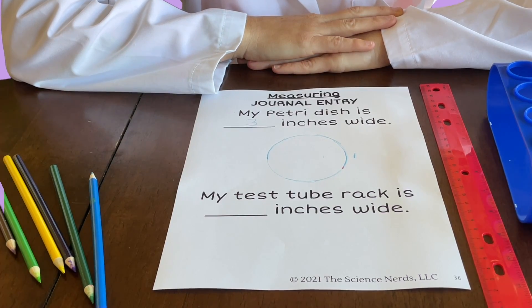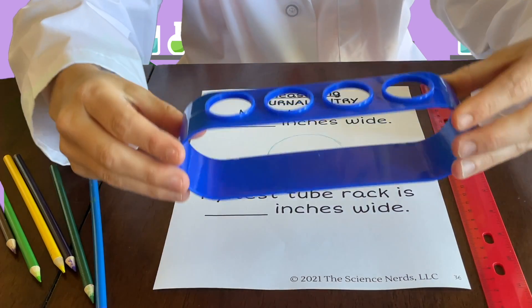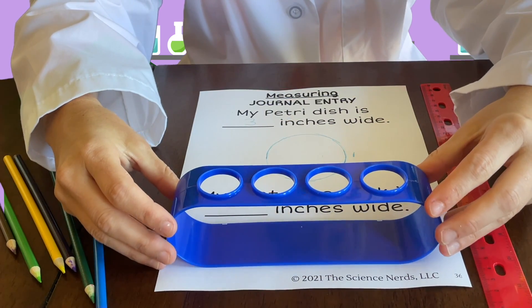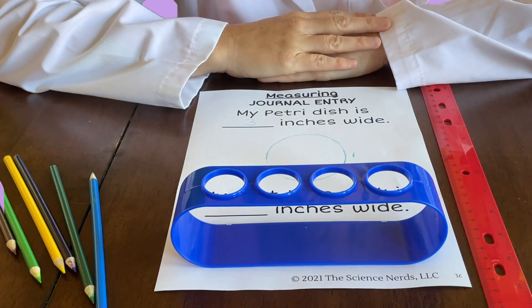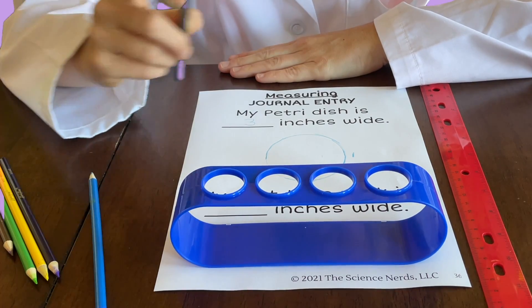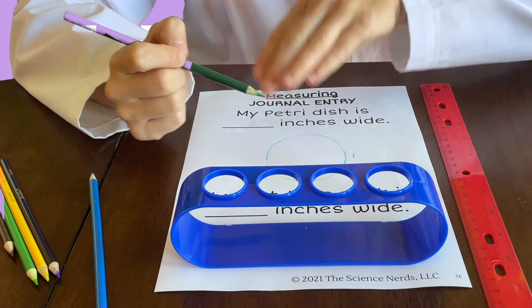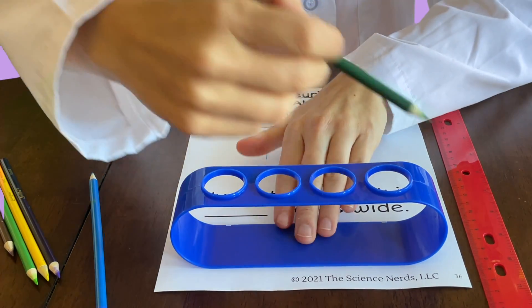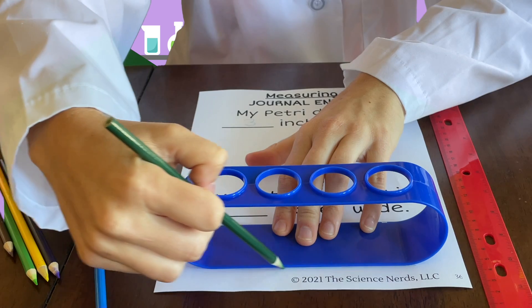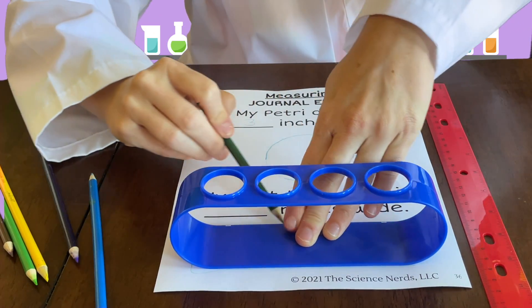Next, find your test tube rack. Place it in the empty space below the second sentence. Let's use our green colored pencil this time. Trace around your test tube rack. You might need to hold it down with your other hand so it doesn't move. It's kind of a funny shape.